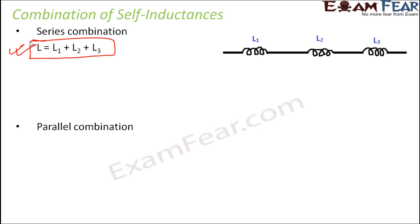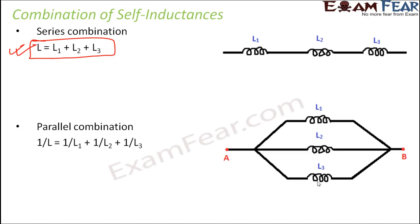Whereas if it is a parallel combination like this, where you have three inductors such that the end points, like first end point of all the three are joined together. So in this kind of a combination, the equivalent resistance is given by this expression: 1 by L is equal to 1 by L₁ plus 1 by L₂ plus 1 by L₃. So this is how we find out equivalent inductance.